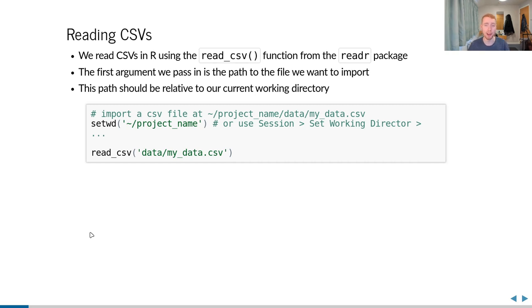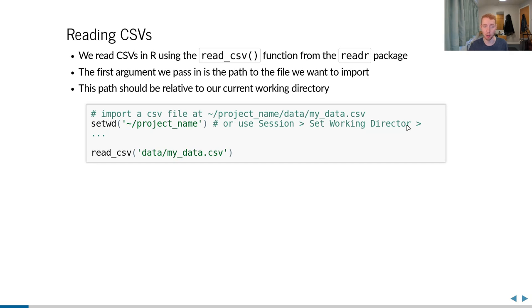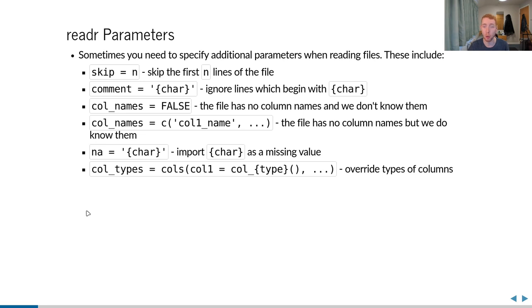The main body of last session was about reading CSVs using the read_csv() function with various parameters. The most important parameter is the first one — the path to the data we want to import. A slightly confusing concept was that this is a relative path, given relative to our current working directory. We can change that using the Session menu in the top bar or using the setwd() function. From that working directory we can then specify the path to our data and import it.